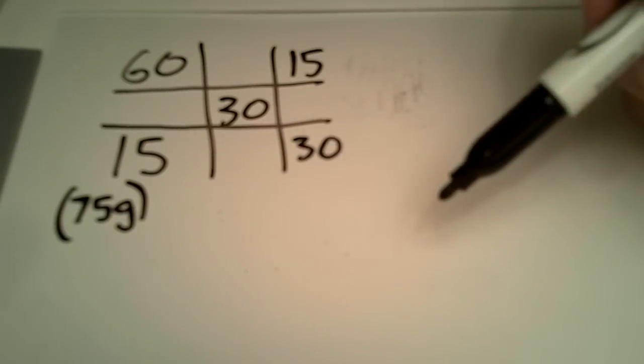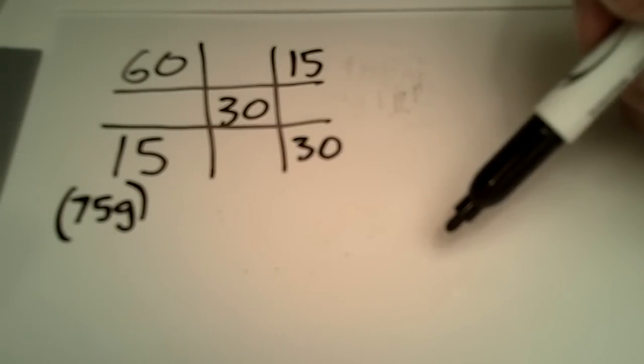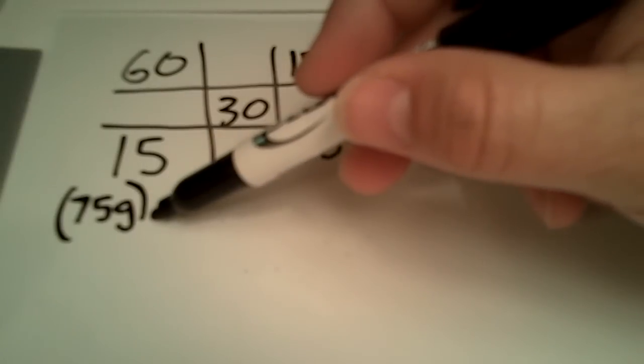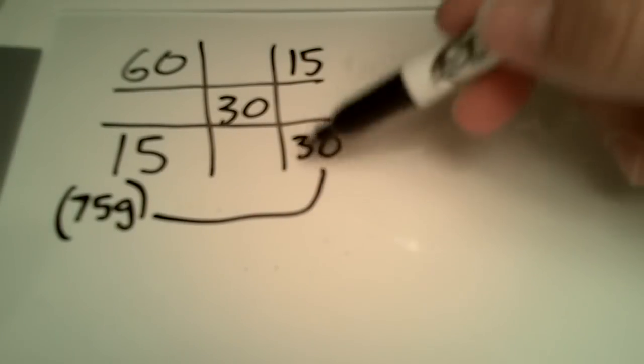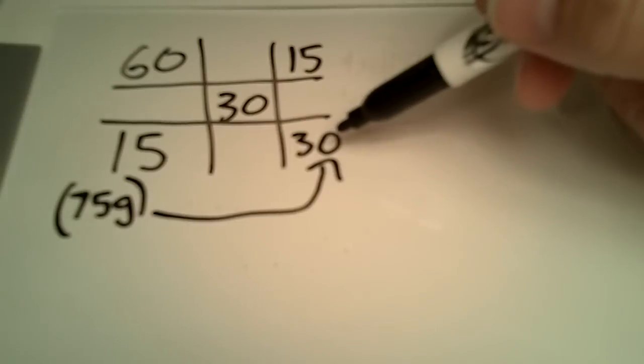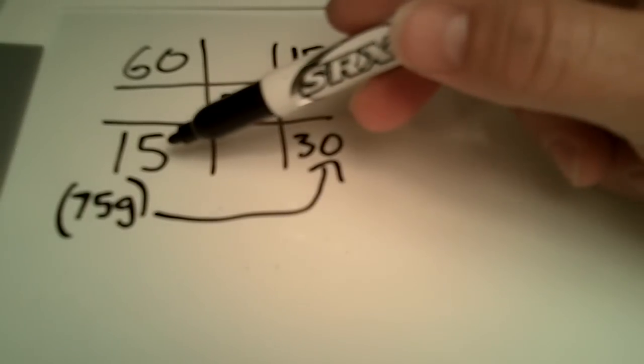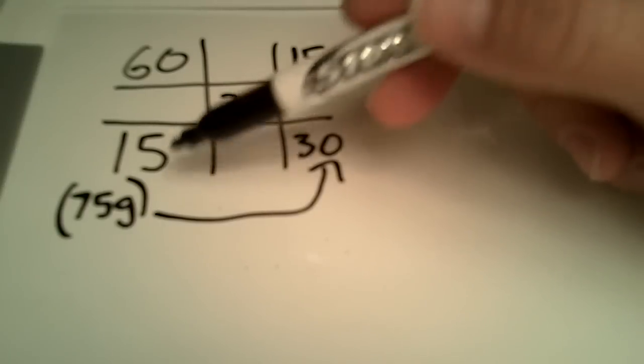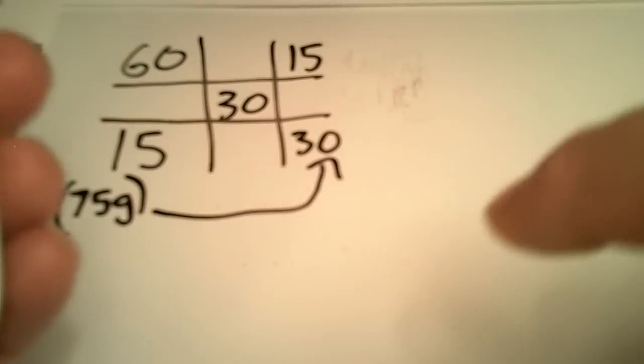And so now, instead of calculating all the parts and doing all the other division that we normally do, we'll just take this 75 grams and divide that by the parts that we have of the 15%, which is what we've got.